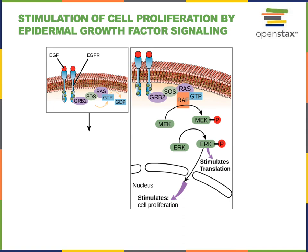When epidermal growth factor binds to the receptor on the surface of cells, that receptor will then activate an intracellular signal known as the extracellular signal-regulated kinase phosphorylation cascade. Extracellular signal-regulated kinase is abbreviated ERK. The ERK phosphorylation cascade is a series of enzymes that become activated by phosphorylation and then stimulate the phosphorylation of other proteins that will ultimately regulate the transcription and translation of the cyclin genes to produce cyclin proteins that speed up the cell cycle, stimulating mitotic cell division.